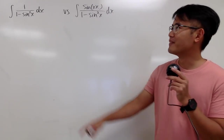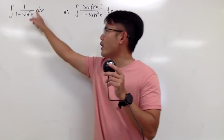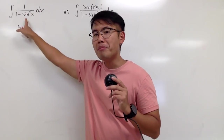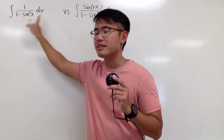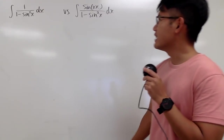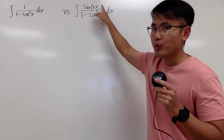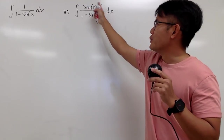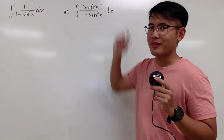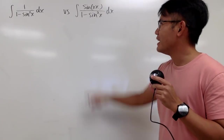We have two integrals on the spot. The first one is the integral of 1 over 1 minus sine squared x, dx. And the second one is the integral of sine of 2x — we have this additional sine of 2x on the top.